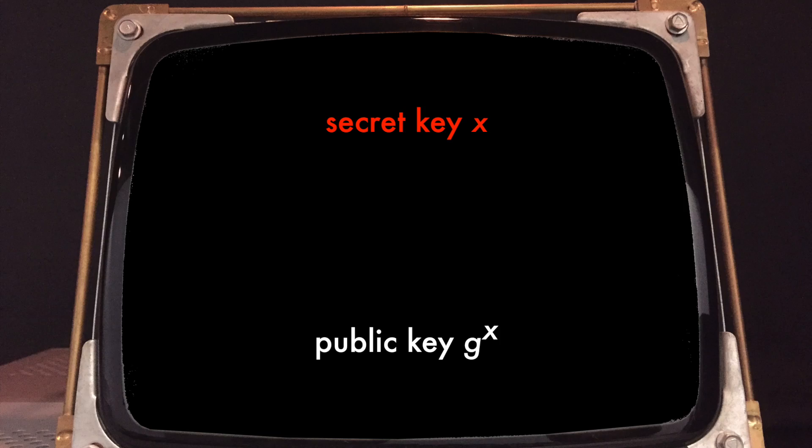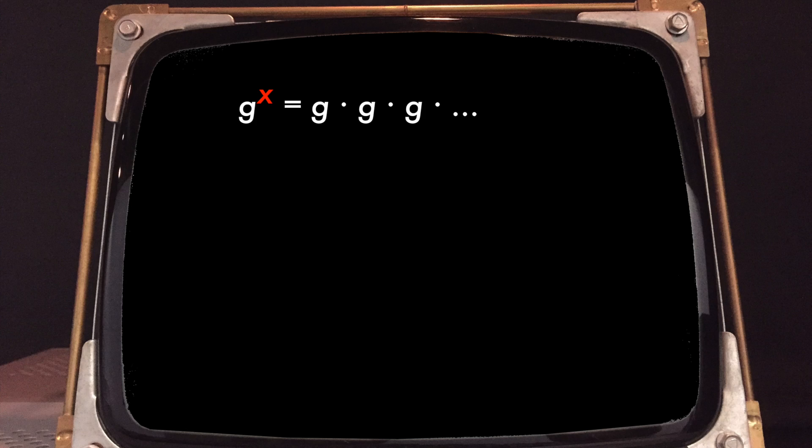It's a function which is easy to compute in one direction. So given G and X, it's easy to compute G to the power X. This isn't obvious. In fact, the naive way of computing G to the power X would be to compute G times G times G times G and so on X times. But remember, X is huge. So the number of multiplications needed would be huge as well. If X is hundreds of digits long, it would take thousands if not millions of years for our best computers to perform the computation.